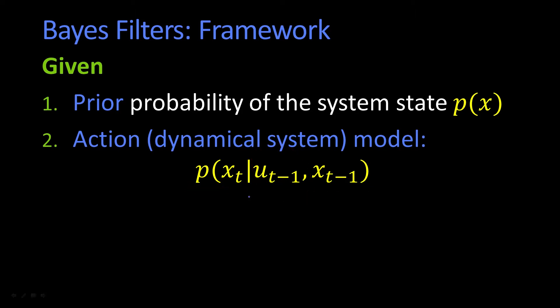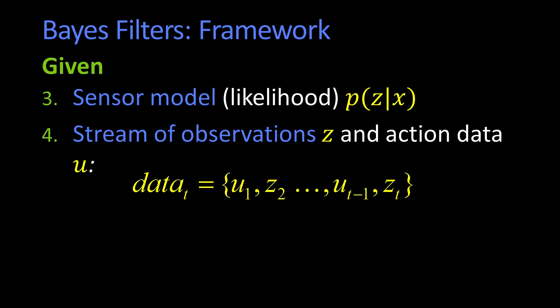We're given a prior and action model. We're also given a sensor model. And this is going to be really important, a little bit important this lesson, very important next lesson. And the sensor model is our likelihood.